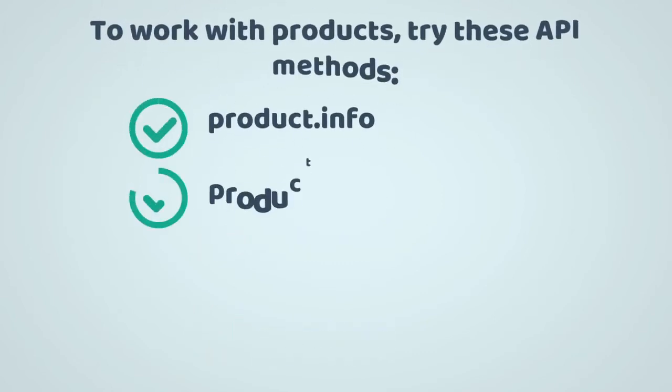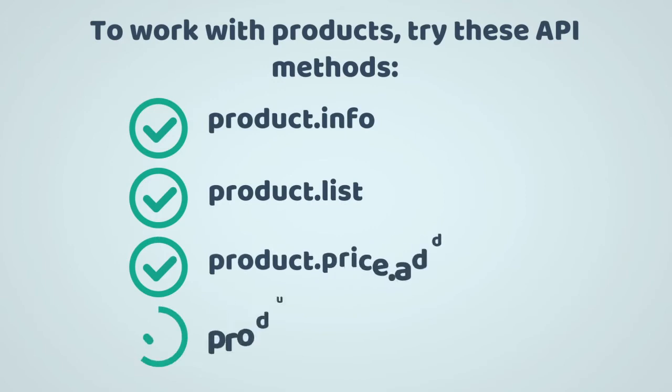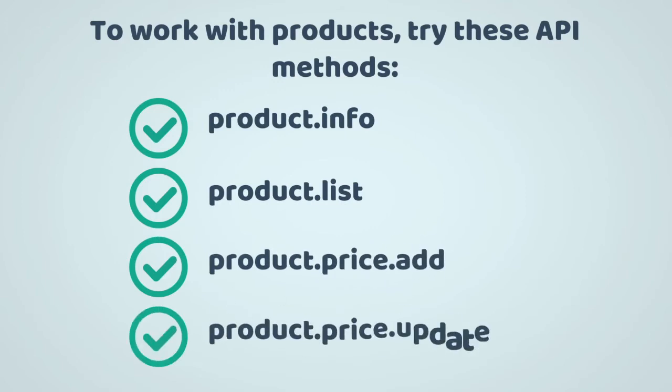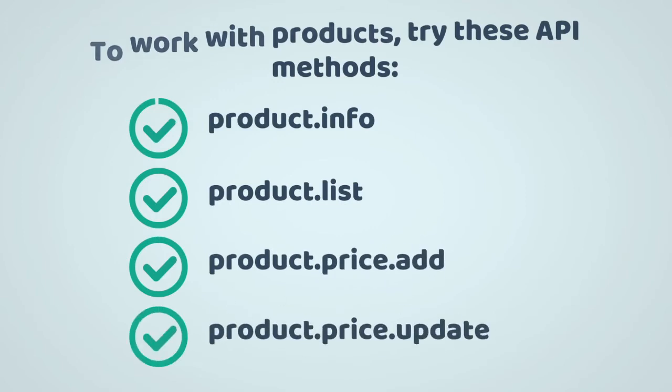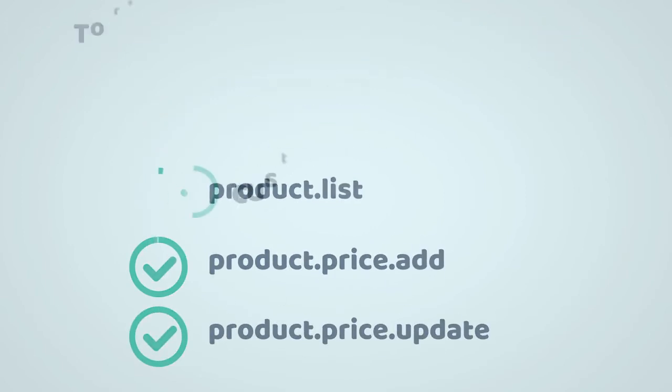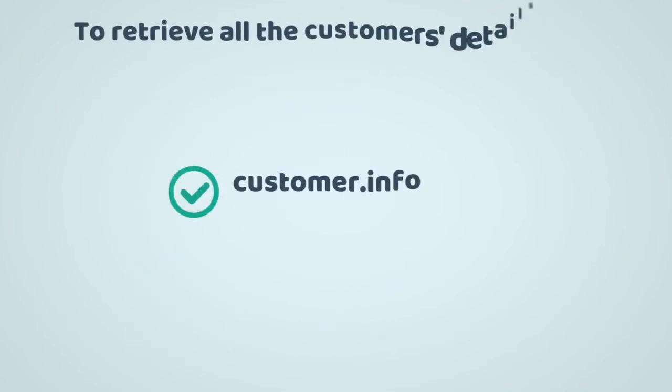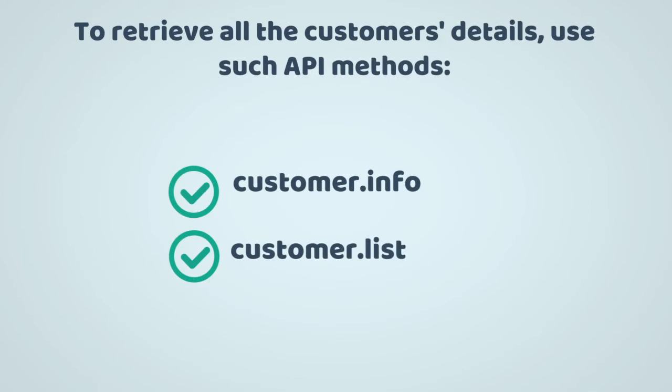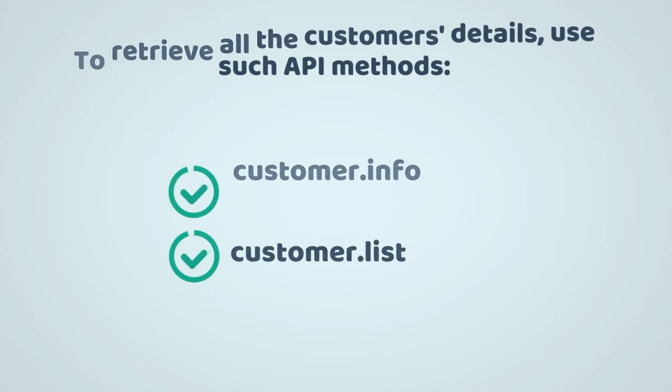Working with products is possible with the help of Product Info, Product List, Product Price Add, and Product Price Update methods. To retrieve all the customer's details such as customer name, phone, shipping address, and other important info for suppliers, you'll need to use Customer Info and Customer List methods.